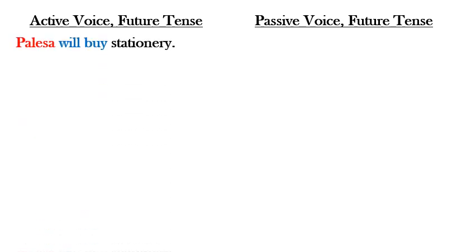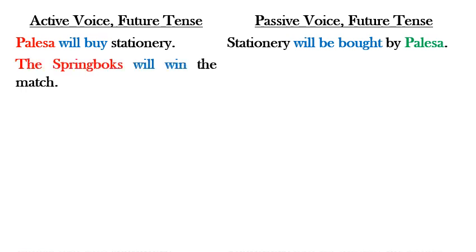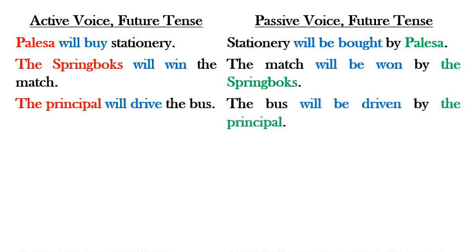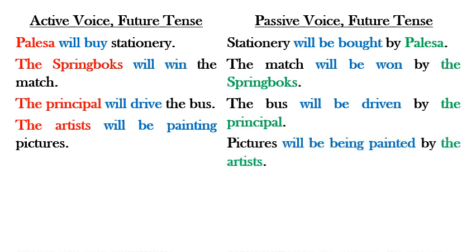Now let's take a look at the future tense — it's slightly different. 'Palasa will buy stationery' in the active, and 'Stationery will be bought by Palasa' in the passive. 'The Springboks will win the match' becomes 'The match will be won by the Springboks.' 'The principal will drive the bus' becomes 'The bus will be driven by the principal.' All straightforward so far.